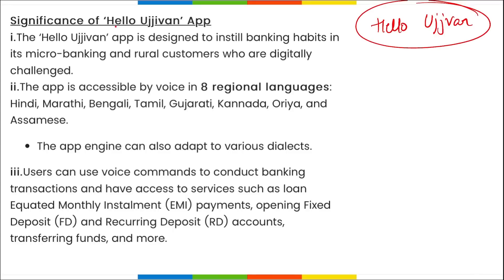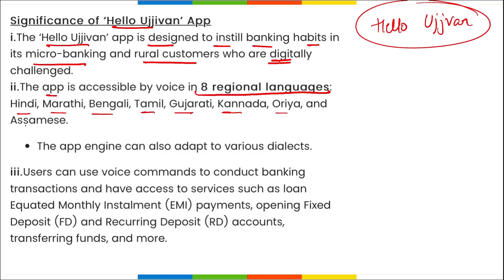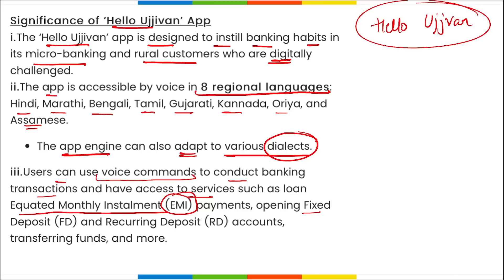Hello Ujjivan app is designed to instill banking habits in micro banking and rural customers who are digitally challenged. The app is accessible by voice in eight regional languages: Hindi, Marathi, Bengali, Tamil, Gujarati, Kannada, Odia, and Assamese. The app engine can also adapt to various dialects. Users can use voice commands to conduct banking transactions and access services such as loan EMI, opening FDs, recurring FD accounts, and transferring funds. This app works on artificial intelligence and machine learning capabilities, and at each step displays a visual representation and a recorded voice guide in the user's preferred language.